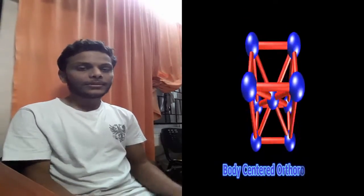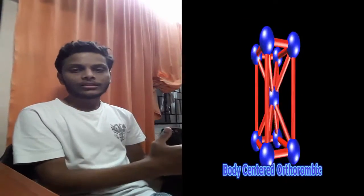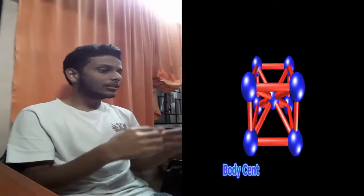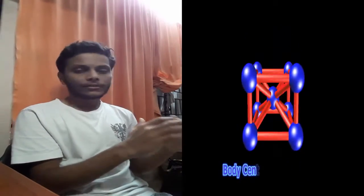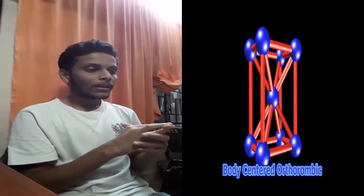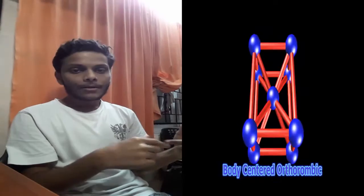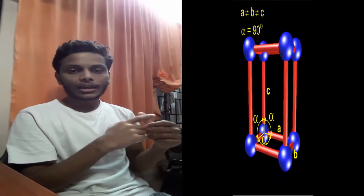Hello there, I am Neil. I am here to speak about body centered orthorhombic crystal lattice. Now basically, the number of atoms present per unit cell in this particular lattice are two, with a coordination number of eight and a packing fraction of 68%. Now, the angles, namely alpha, beta and gamma, present in this particular lattice all measure up to 90 degrees, while the sides, namely A, B and C are unequal in magnitude.